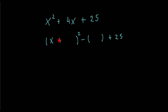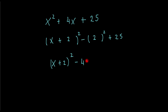Bring the sign down as well. Now this bit here, the 4x — I drop the x and just half the 4, which will be 2, and then that same number I place in here and square it. Then I tidy up and say x plus 2 all squared, and 2 squared will be 4, and of course you've got a minus sign there, so that would be minus 4 plus 25.